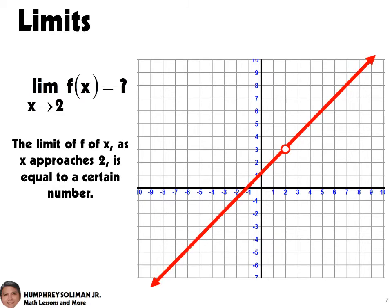Suppose this graph shown is the graph of f of x. Note that there is a hole in the graph of f of x at x equals 2. This means there is no value of y at x equals 2.